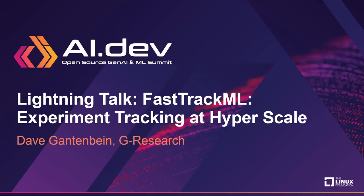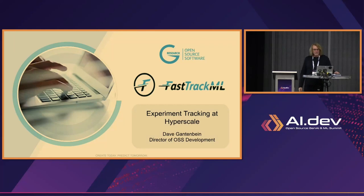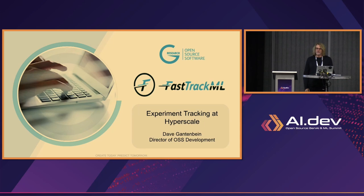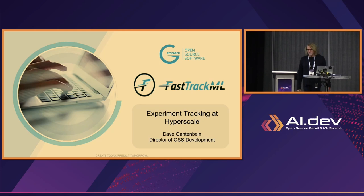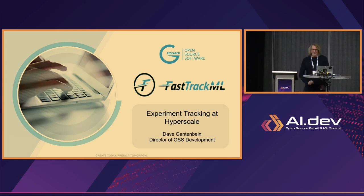Welcome to the best seven minutes of your morning, I hope. I'm going to talk about FastTrackML — it's an open source experiment tracker that we've built. My name is Dave Gattenbein. I'm a director of open source development for a company called G Research, which is a quantitative finance company out of the UK and is not at all associated with that other big tech company that starts with the letter G. I just wanted to be transparent about that. Let's dive right in.